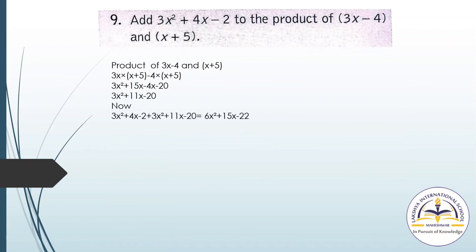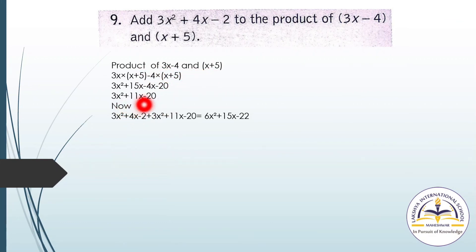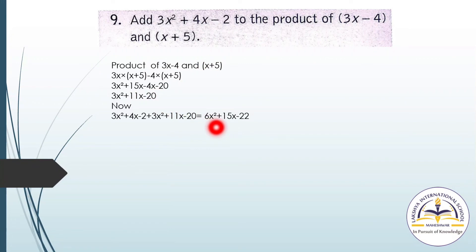Question number 9: Add 3x² plus 4x minus 2 to the product of (3x minus 4) and (x plus 5). First find the product of 3x minus 4 and x plus 5, then add 3x² plus 4x minus 2 to the result to get the final answer.